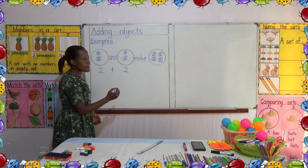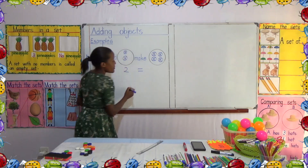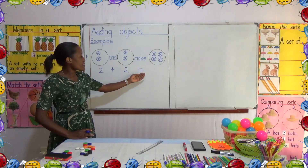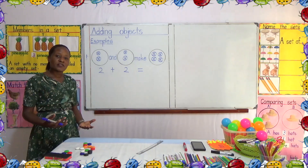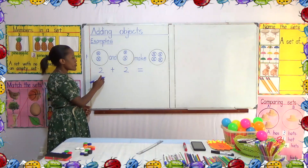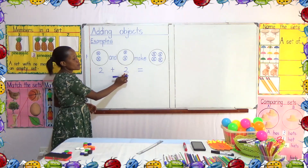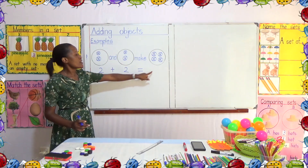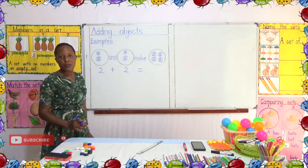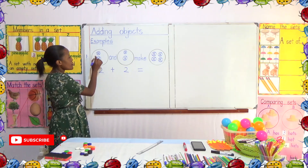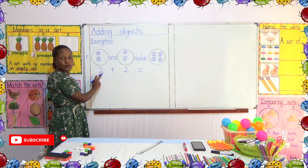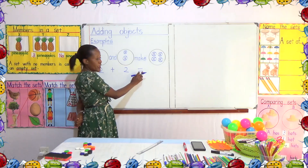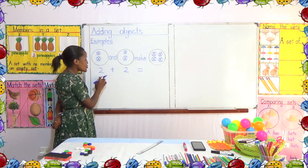We want to find out what they make, and we shall use this sign here — that one is an equal sign. After this sign, we put the answer, we put what we have got. So what does it read? We read it as two plus two equals something. So we count the objects again. One, two. We wrote our two, and we say two plus another two gives us equals. This is the equal sign, so we have two plus two equals.